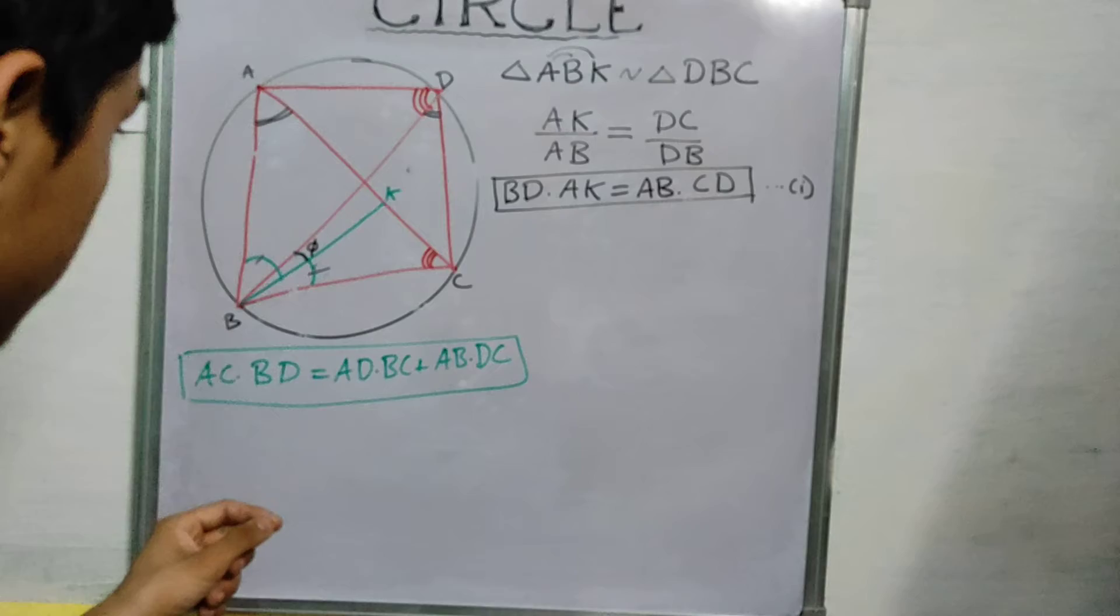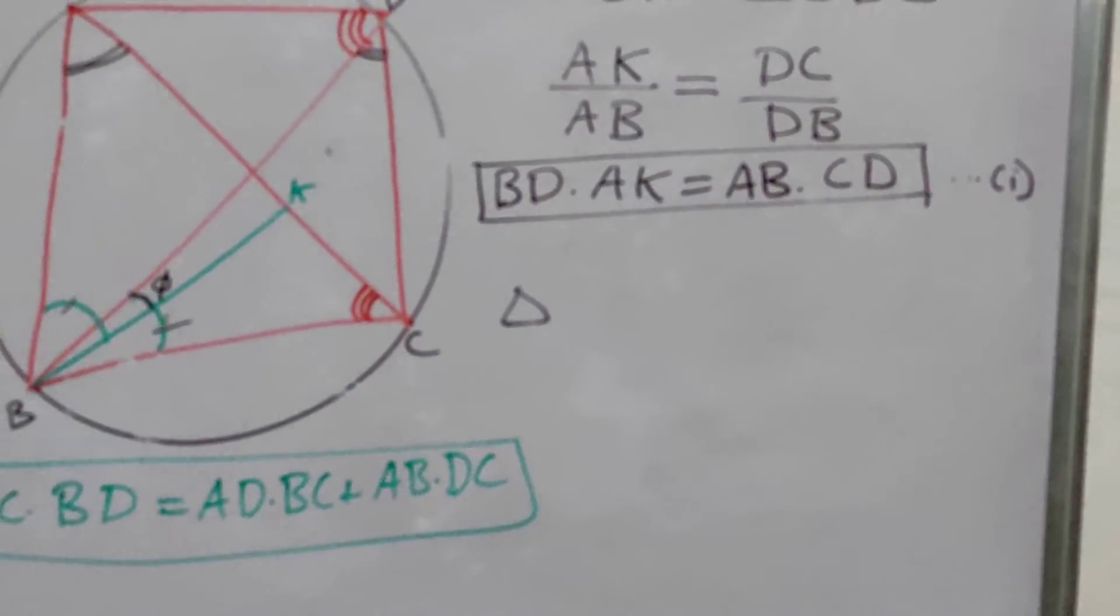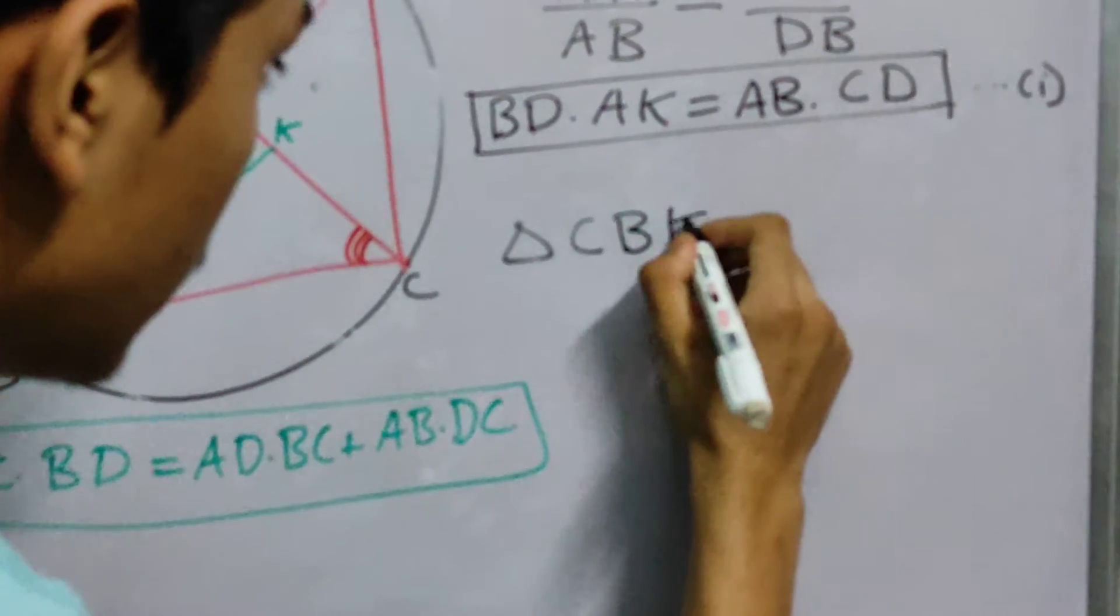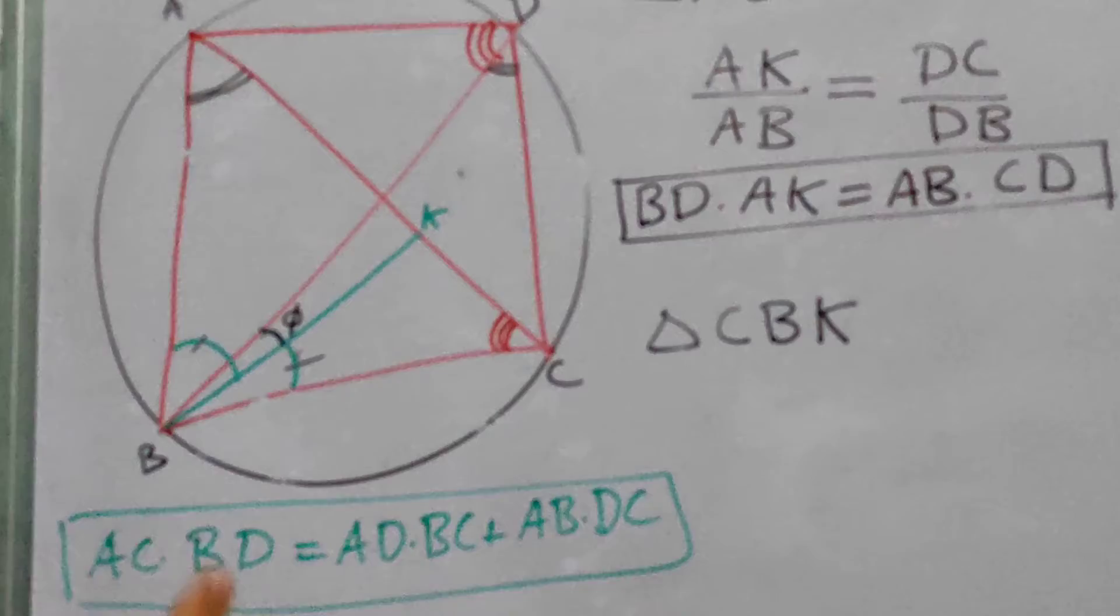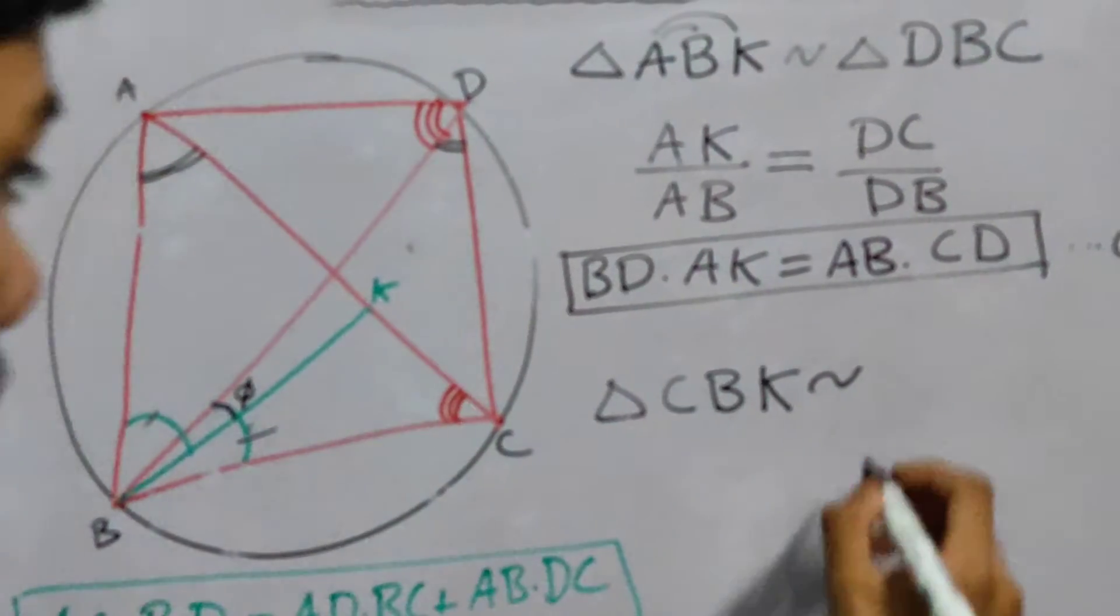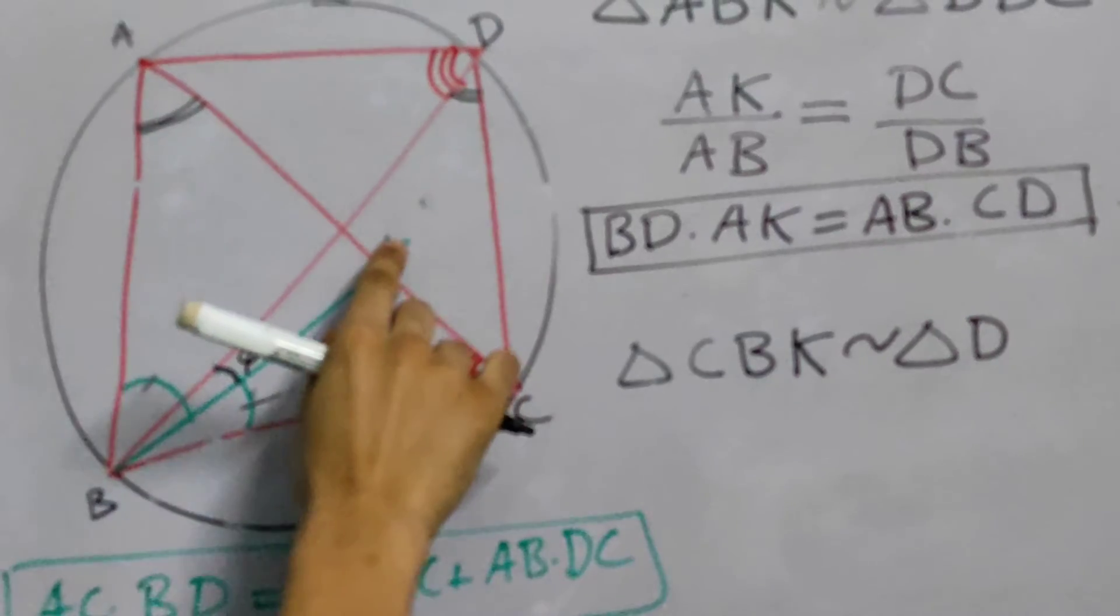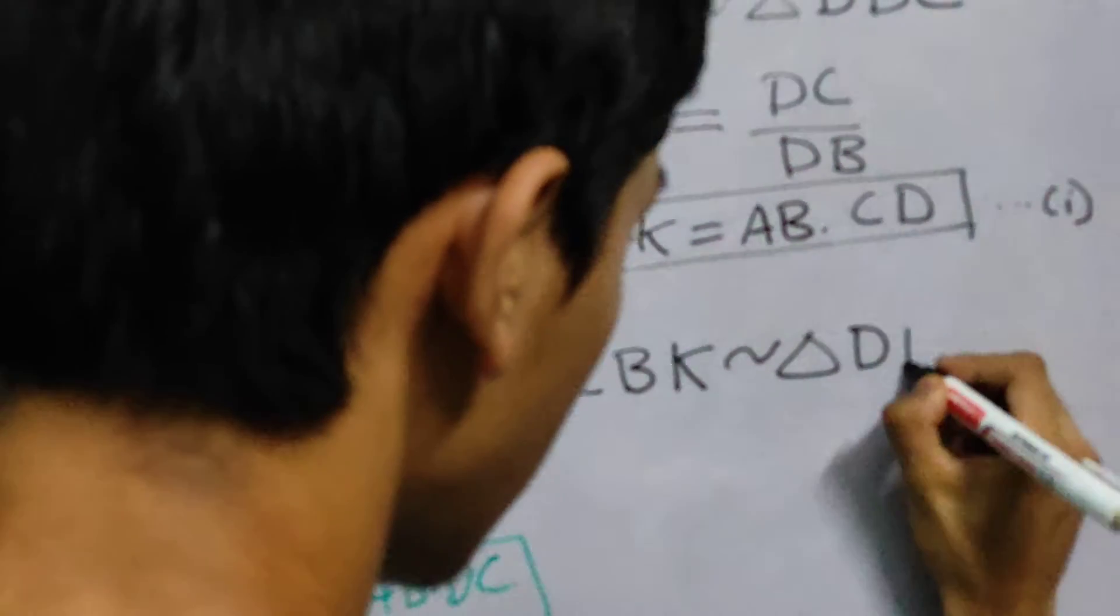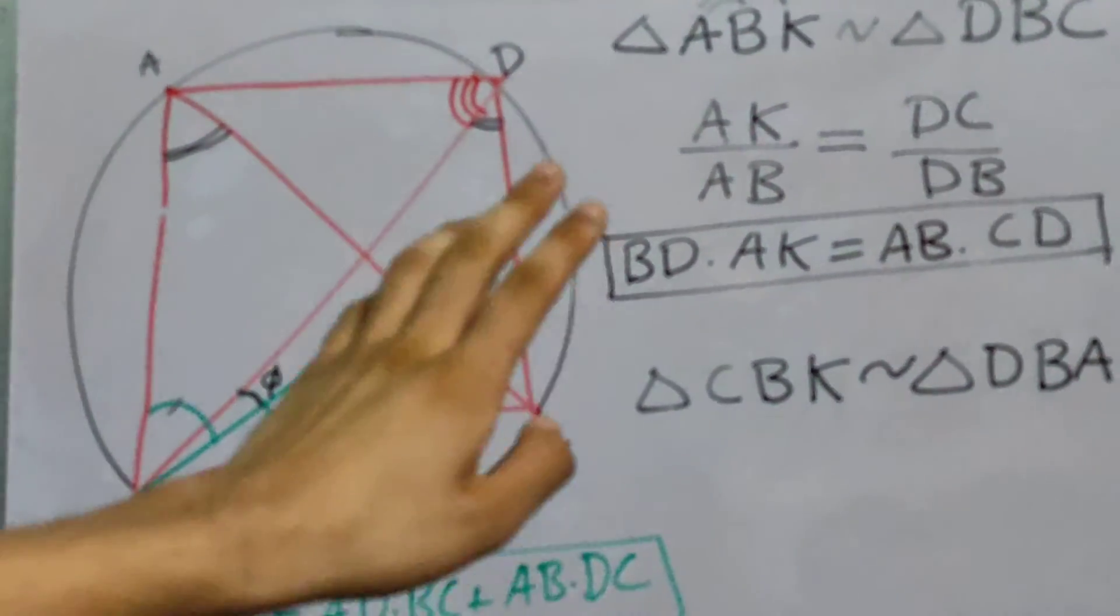Now again we'll find two similar triangles. Now notice, triangle CBK, alright, it is similar to triangle, C is equal to D, triangle D. So CBK, this one, DBA, alright?